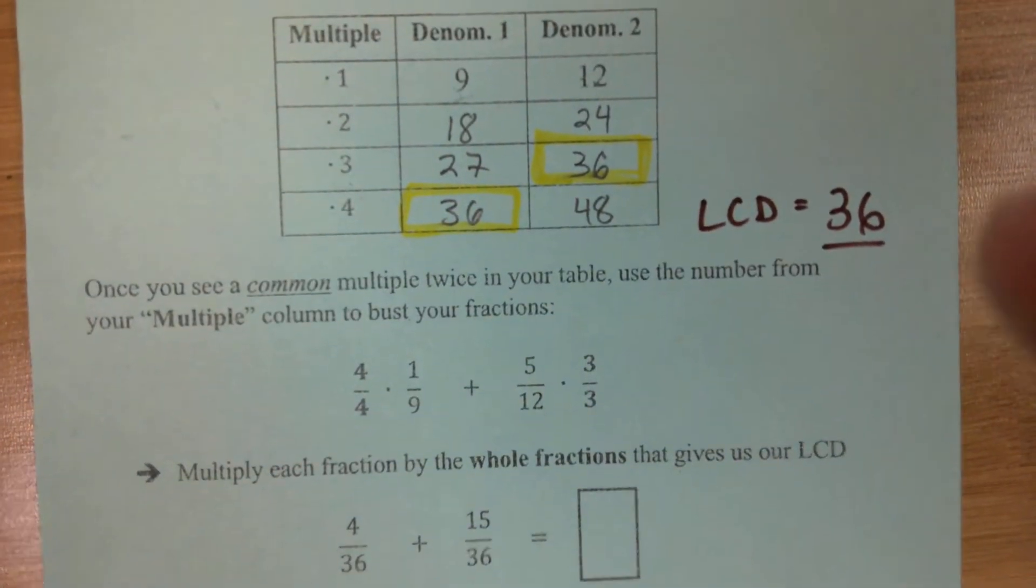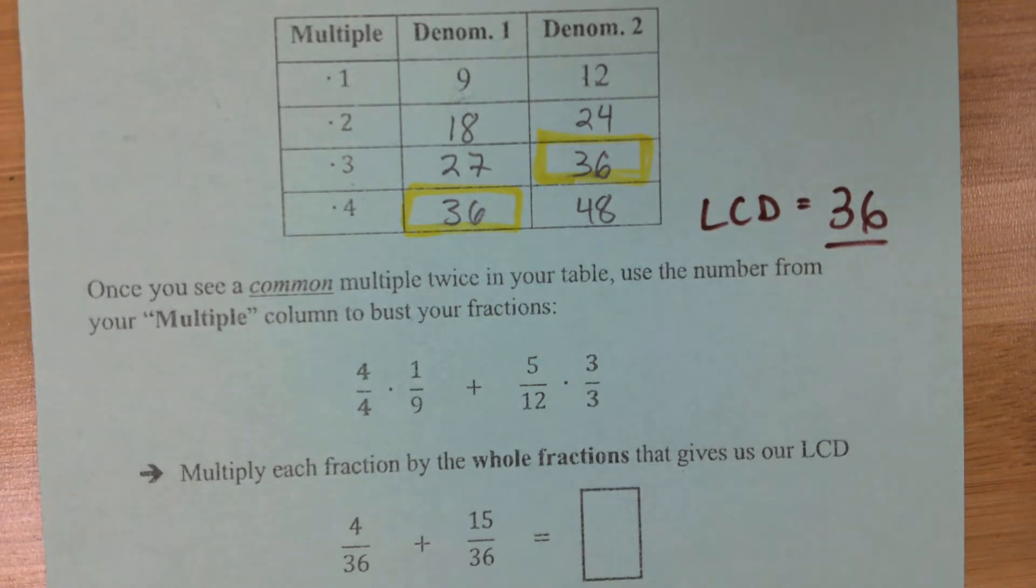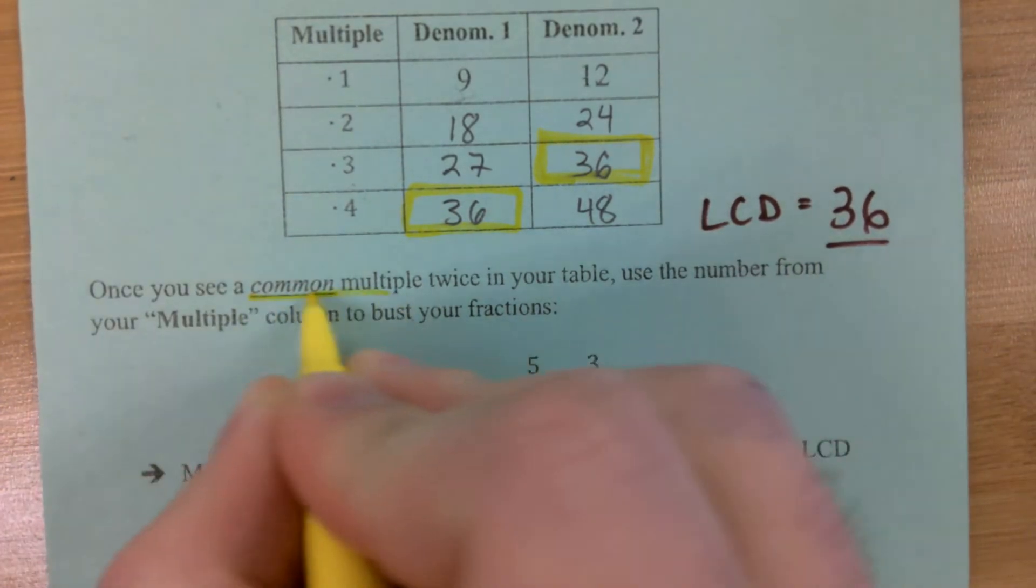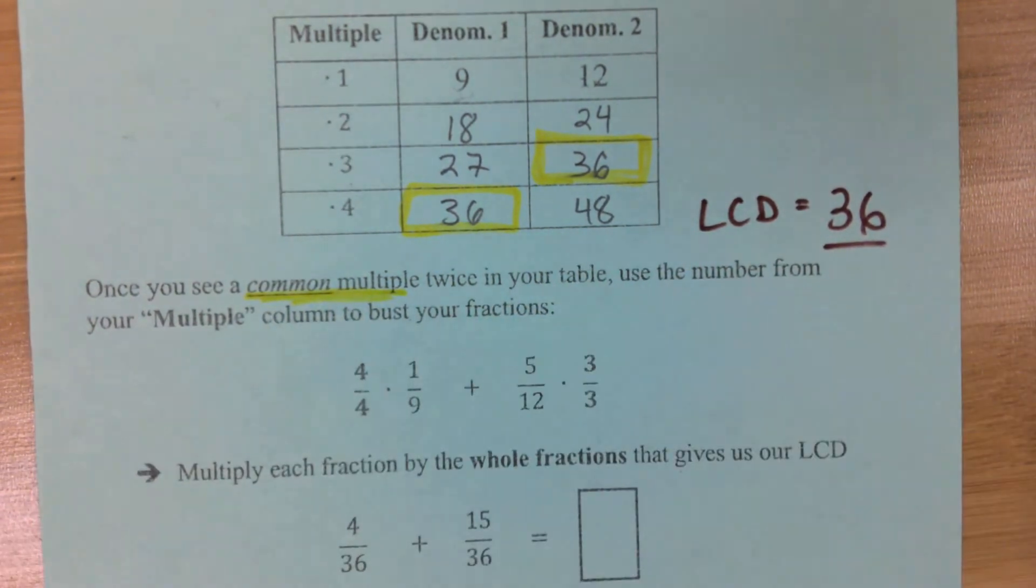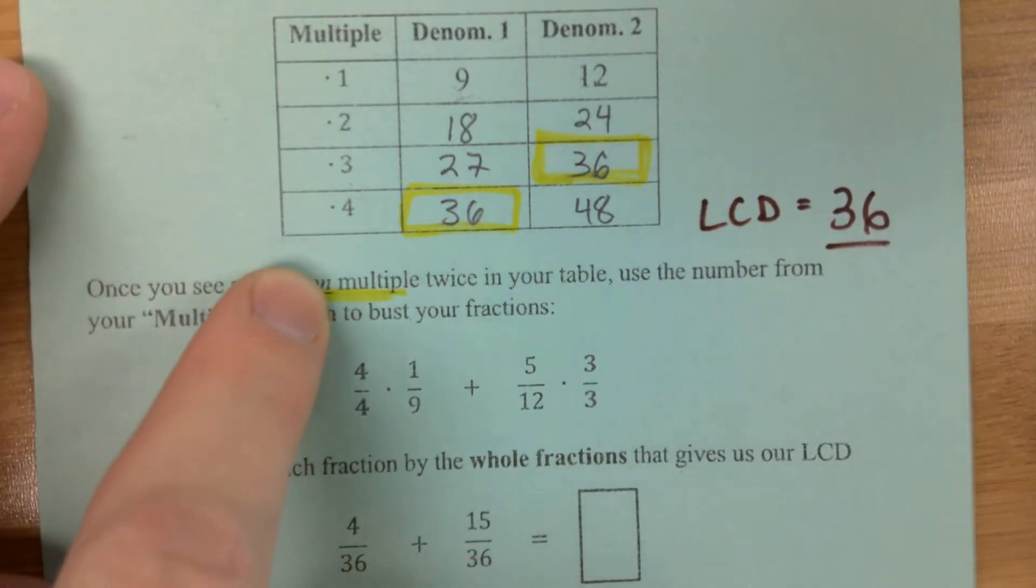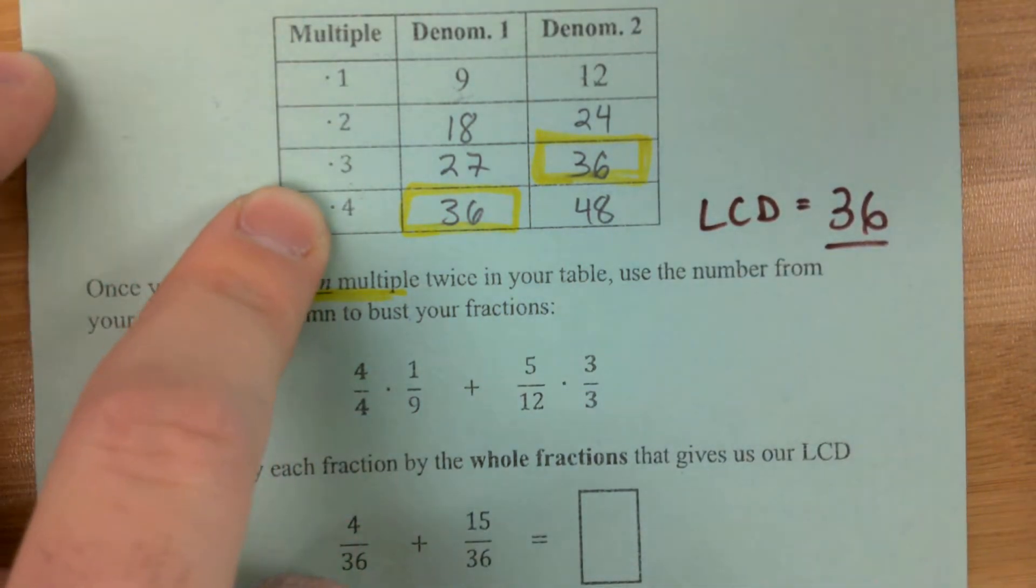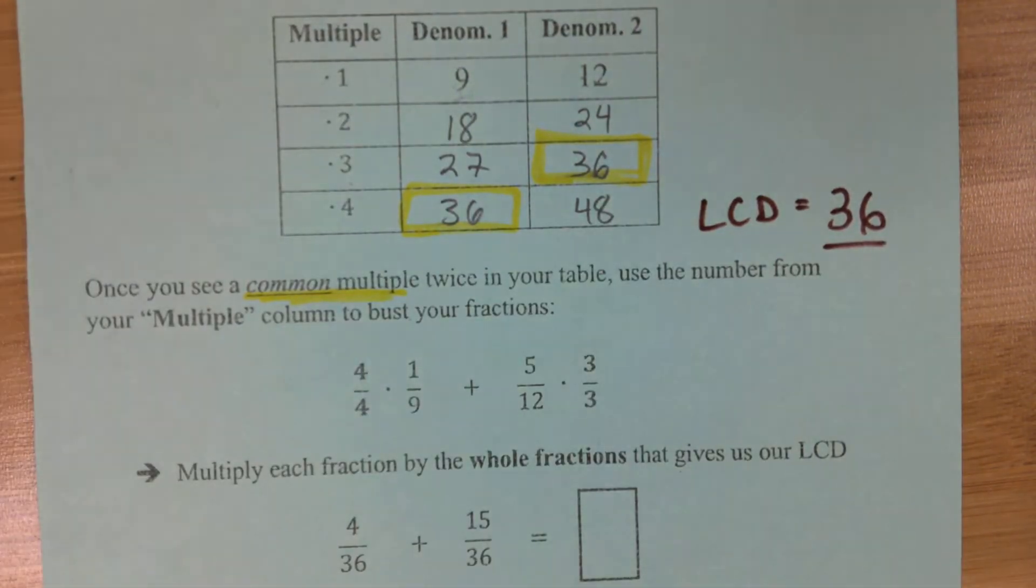Once we see a common multiple twice in our table, that's the 36s right there, we're going to use the number from this far left multiple column in order to, quote unquote, bust our fractions. And what that means is we get all the same denominator so that we can cancel the denominators out and not have any fractions at all. Right? Because we don't want to solve equations with fractions.